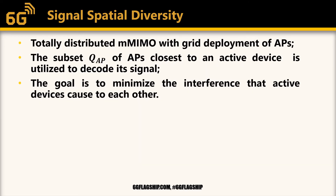In this work, we also study something called signal spatial diversity. We consider only the totally distributed Massive MIMO deployment with the grid distribution of access points, and instead of using all the access points to decode the signal transmitted by the active user, we now consider that only a subset of Q access points closest to the device are utilized to decode each signal. The goal is to minimize the interference that the active devices cause to each other.